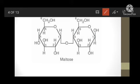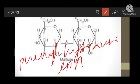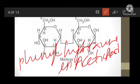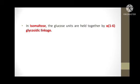Reducing sugars like maltose and lactose, when boiled with phenylhydrazine in acetic acid, form osazones. Just remember: reducing sugars boiling with phenylhydrazine in acetic acid form osazones. That is about maltose, the 1st example.